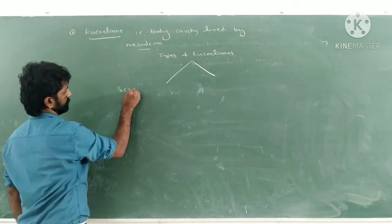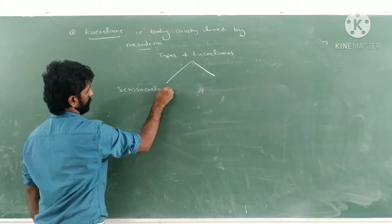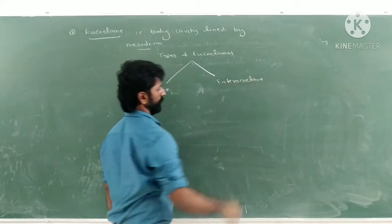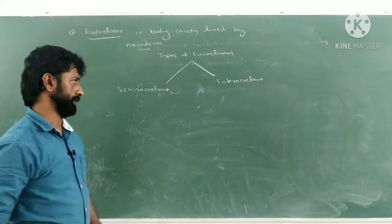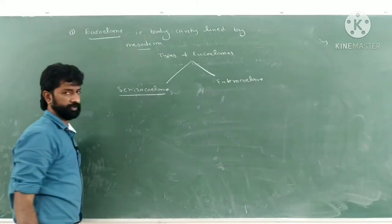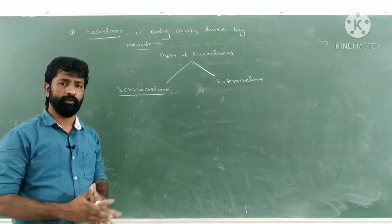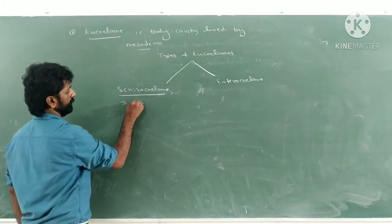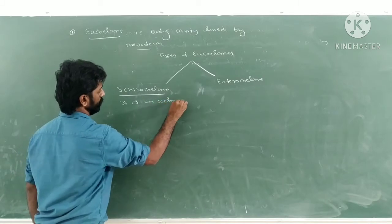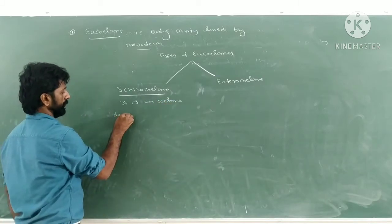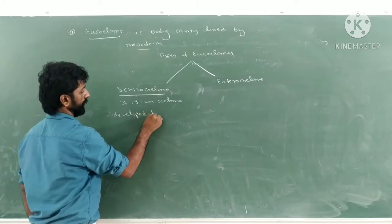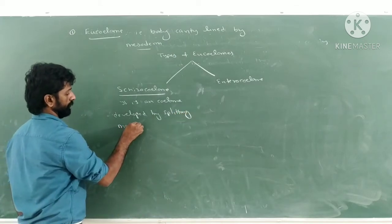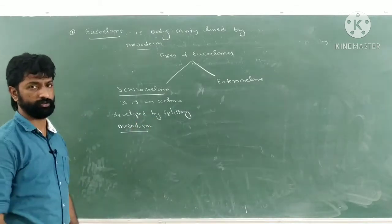The two types of eucoeloms are schizocoelom and enterocoelom. Schizocoelom is a true body cavity or coelom that develops by splitting of the mesoderm — it is a coelom developed by splitting the mesoderm, and so it is called schizocoelom.